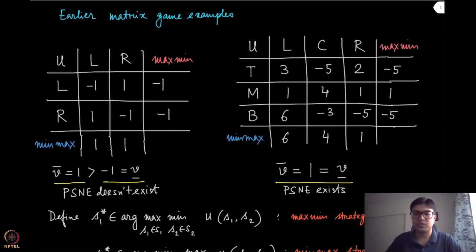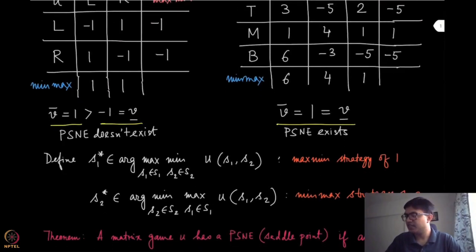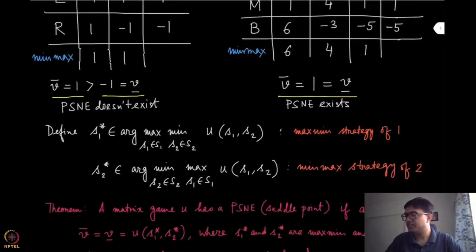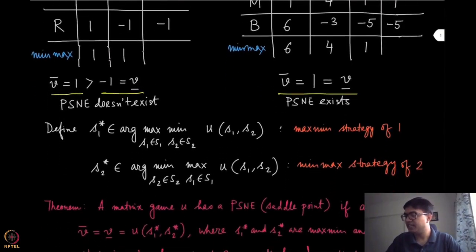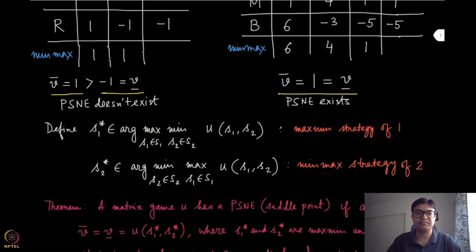Is this just a coincidence? We will show in this module that it is not a coincidence. Indeed, if a PSNE has to exist, then it must be the case that the minmax and the maxmin values are the same.